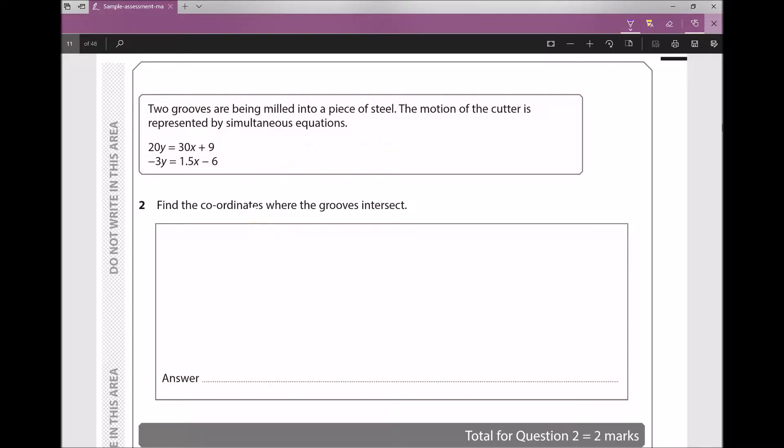So if we begin with our two equations, I'm going to call the first equation one, which states that 20y = 30x + 9. And I'm going to call the second equation two, where -3y = 1.5x - 6.